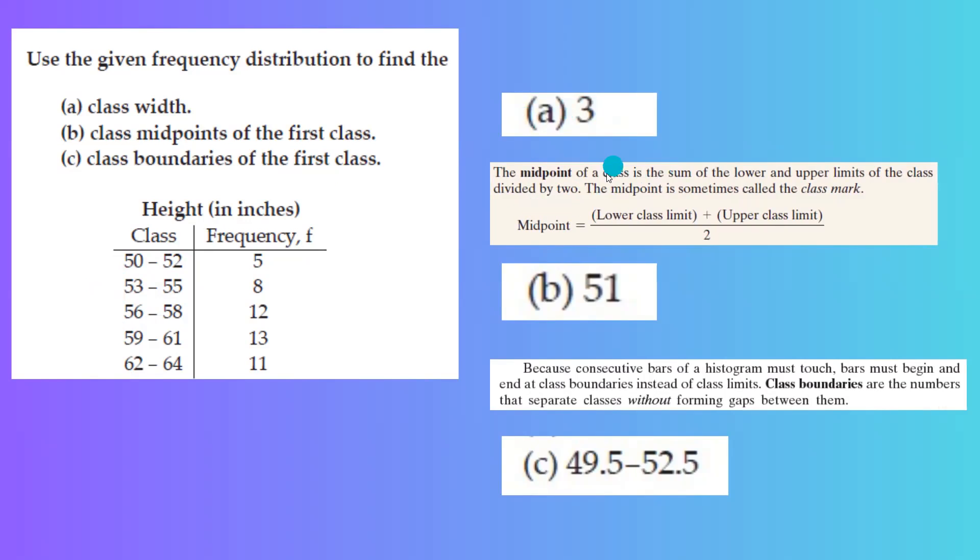Now for the midpoint. Remember the definition of midpoint: the midpoint is the lower class limit plus the upper class limit divided by 2. 50 plus 52 divided by 2 gives you 51.